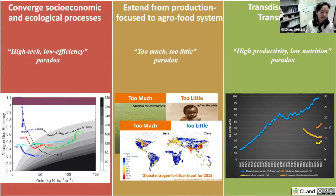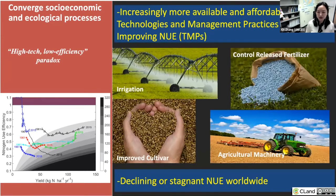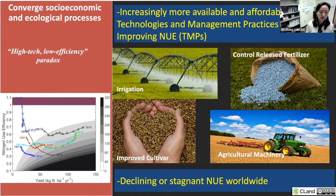Those three major elements are the keys for understanding and addressing three major paradoxes in current nitrogen management. The first paradox I call the high-tech, low-efficiency paradox. With all the fast-evolving modern technologies — including 4Rs, genetic improvement, and many management practices — they can significantly improve the efficiency of nitrogen uptake by crop plants, and those technologies have become more available and affordable around the world.